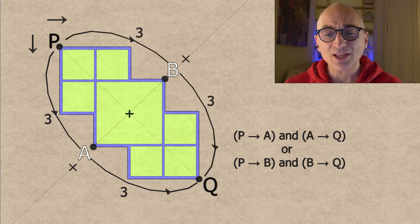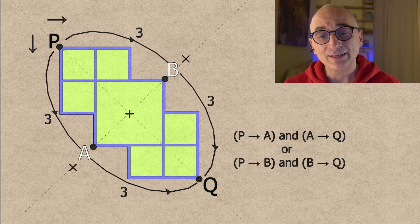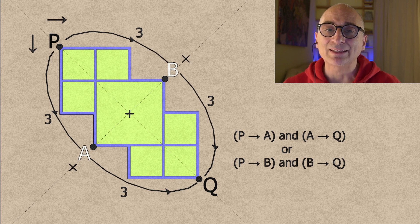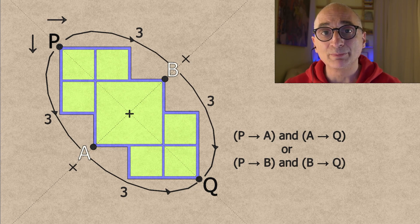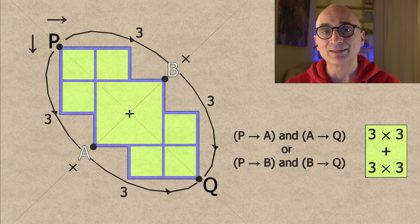And on the other side, I also have three times three paths. That is nine paths that go from P to Q going through B. And I add them and I get 18 paths. And that's the solution.